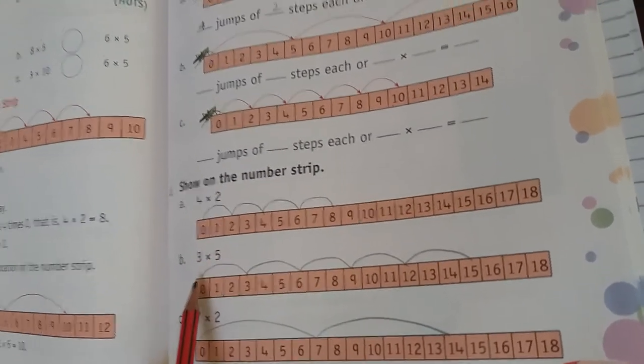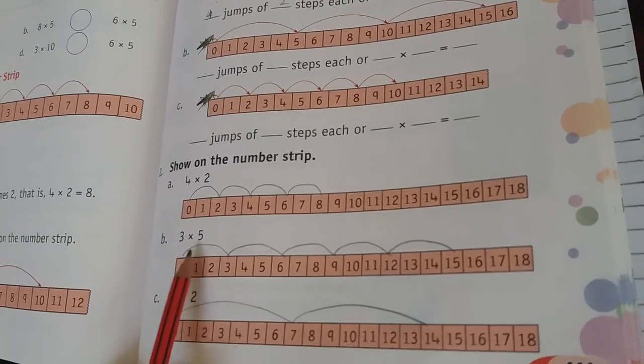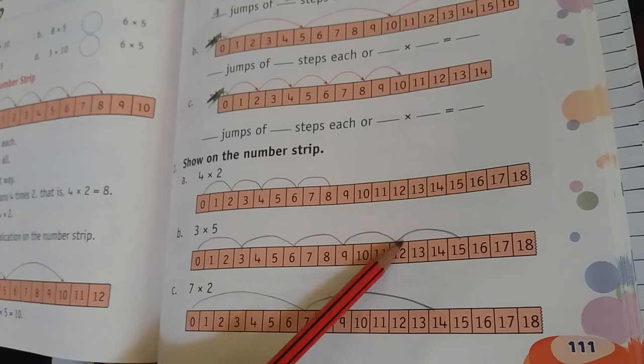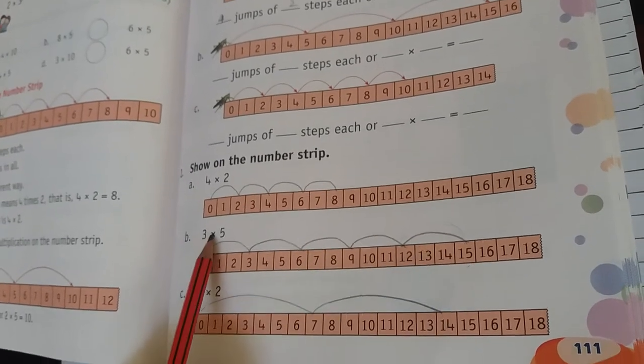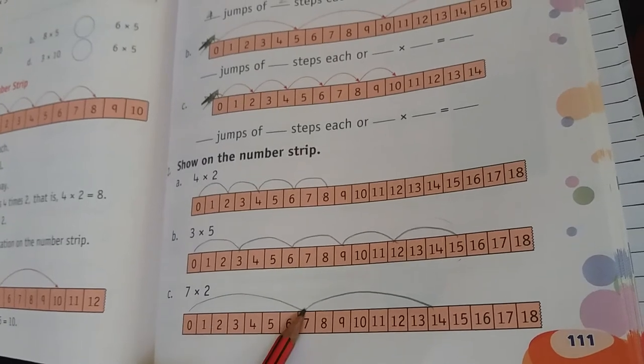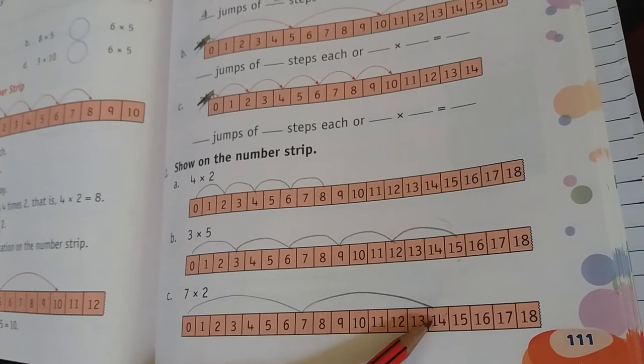3 into 5. 3 numbers are made by skip and jump, 1, 2, 3, 4, 5, 15. 3 into 5 is 15. 7 into 2, 7 into 2 steps are made by jump. So 14.